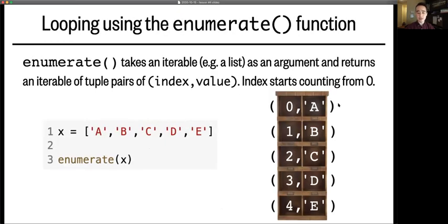The second useful function I want to mention is enumerate. And unlike zip, it takes only one argument, which can be any iterable, such as this list here, and it spits out an iterable object of tuple pairs. Again,